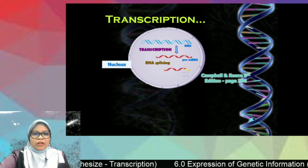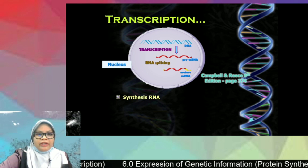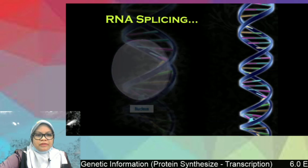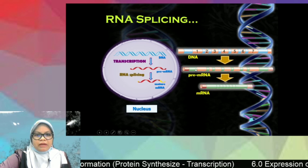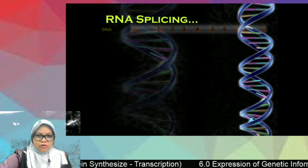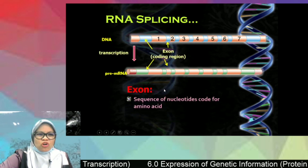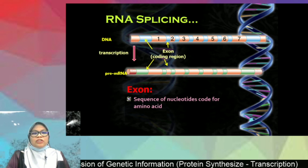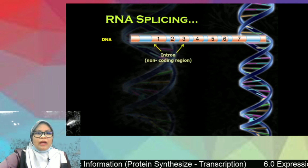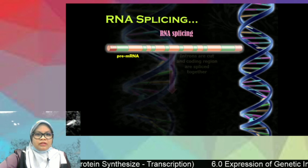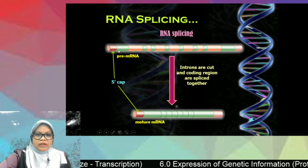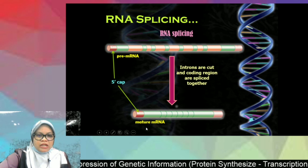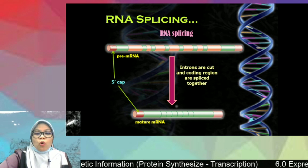Now we have the pre-mRNA, which undergoes RNA splicing to remove the intron regions — the non-coding regions. Pre-mRNA consists of alternating introns and exons. Exons are coding regions while introns are non-coding regions. During RNA splicing, introns are removed, so that the mature mRNA consists only of exons — the coding regions.